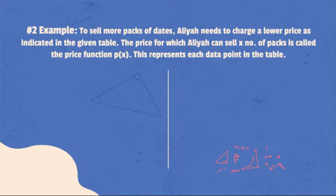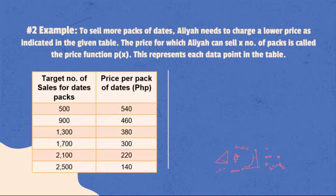Here is another example. To sell more packs of dates, Aliyah needs to charge a lower price as indicated in the given table. The price for which Aliyah can sell x number of packs is called the price function p(x). This represents each data point in the table. What we are looking for is the function p(x) itself.